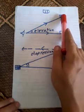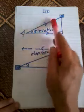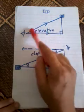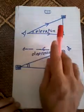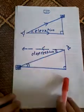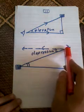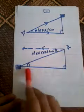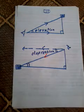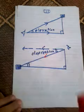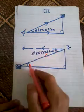Elevation and depression angles: if a person stands and looks upward toward something on a tower or building, the angle between the ray from their eye to the object and the ray parallel to the ground is the elevation angle. The depression angle is when someone looks downward; the angle between the horizontal ray and the ray to the object below. Alternate angles show that the depression angle equals the elevation angle in the corresponding triangle.